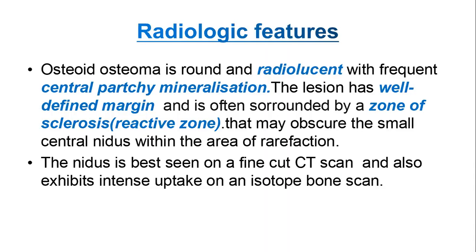The radiographic features are very specific. Osteoid osteoma appears as a round radiolucent lesion with frequent central patchy mineralisation. The lesion has a well-defined margin and is often surrounded by a zone of sclerosis or reactive bone that may obscure the small central nidus within the area of rarefaction. The nidus is best seen on fine CT scan cuts and also exhibits intense uptake on isotope bone scan.